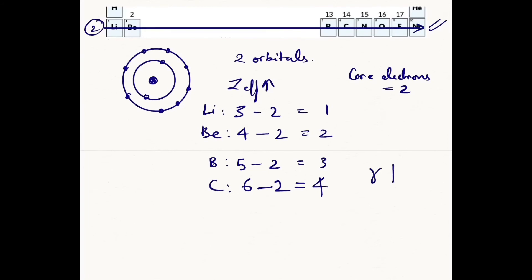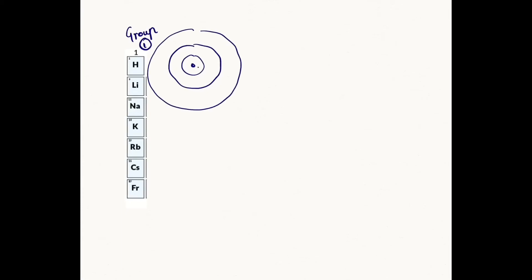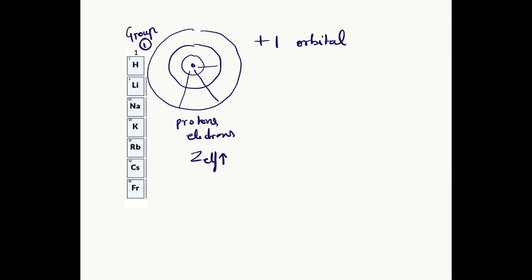Now let's find the variation in atomic size in a group — like group one. In the case of hydrogen, we have only one orbital; lithium has two orbitals; sodium has yet another orbital added. Genuinely, you can see the radius will increase. You might also assume that because of the huge addition of protons and electrons, there should be an increase in effective nuclear charge too.